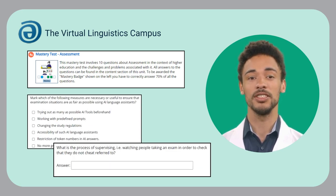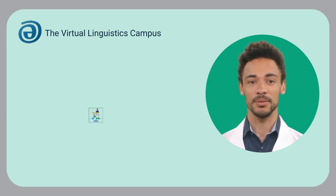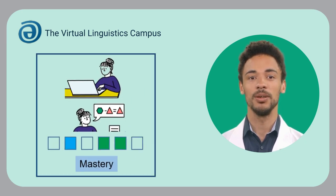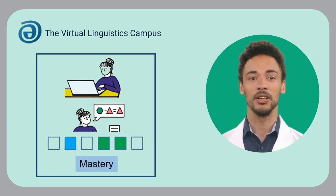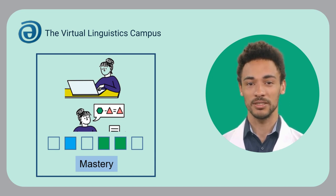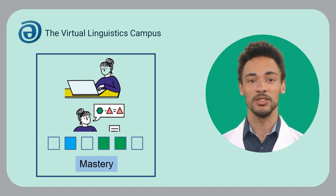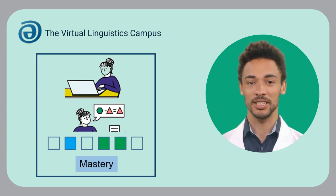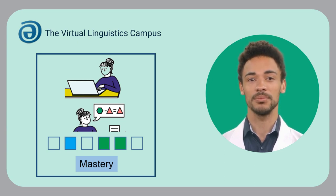To be awarded the mastery badge shown here, you have to correctly answer 70% of all the questions. But since all answers to the questions can be found in the content section of this unit, this test should be easy for you.